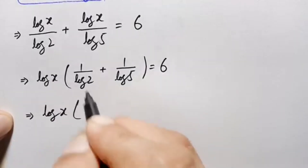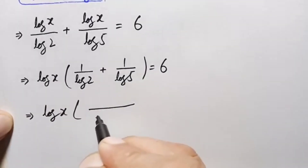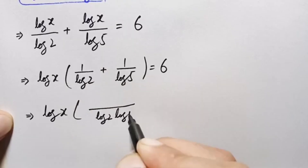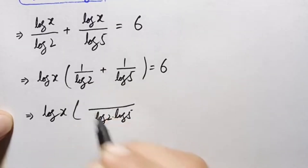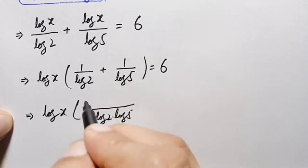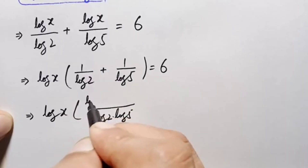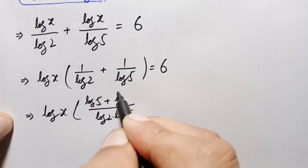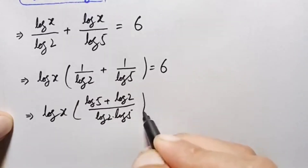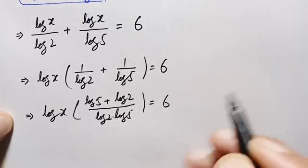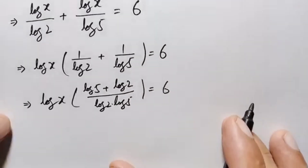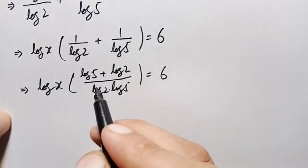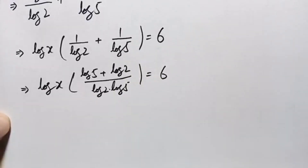Adding the fractions gives log of x times (log of 5 plus log of 2) divided by (log of 2 times log of 5), is equal to 6.